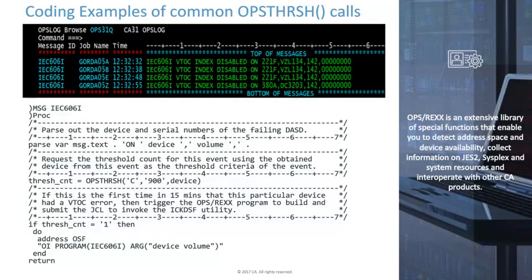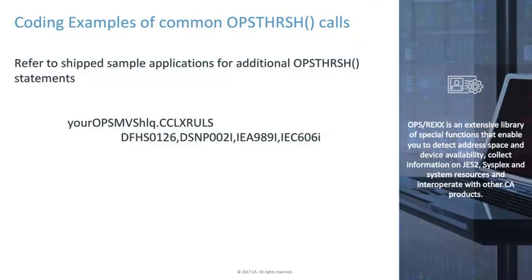Similar to the last sample, this OpsThresh function sets a criteria threshold type on the IEC606I VTOC errors that can be generated by any DASD volume. The specific logic of this rule fires upon the first issuance of an IEC606I issued for a unique DASD volume, if issued multiple times within a 15 minute window. Looking at the filtered errors in the OPS log window, three different jobs caused the issuance of this error for the same 221FOX volume within a few seconds of each other. The OpsThresh coded in this triggering rule ensures that the logic to run the ICKDSF utility program only happened once in this 15 minute window.